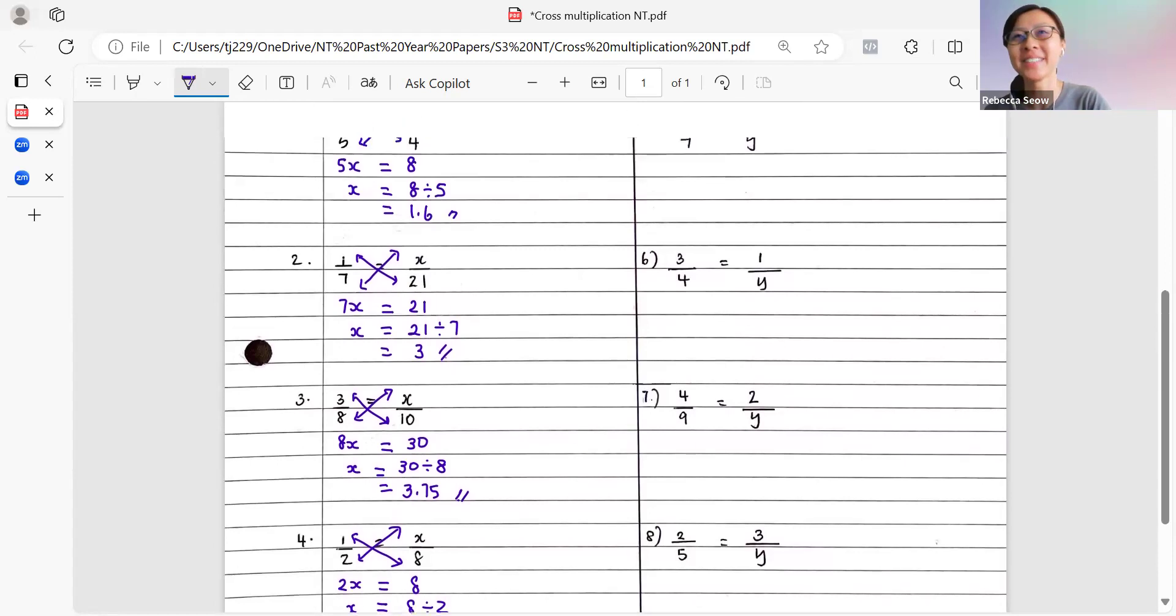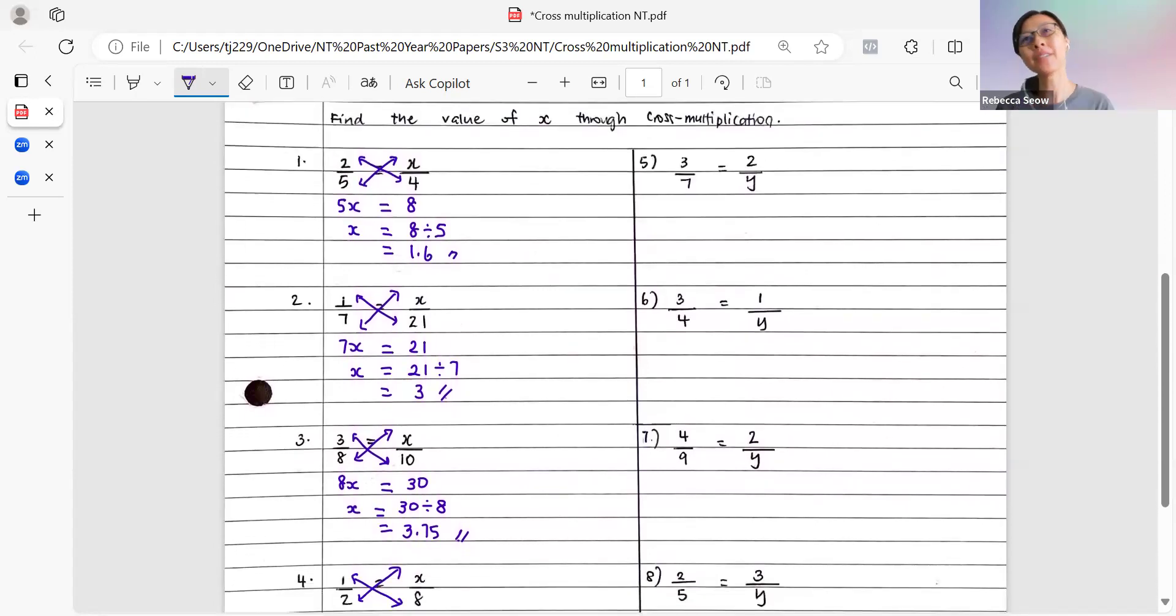Let's take a look at questions 5 to 8. Now, for questions 5 to 8, you realize that the unknown is actually found in the other diagonal. So similarly, we draw in the arrows. Instead of taking 7 times 2, which doesn't contain any variable, let's multiply across the other diagonal, 3 times y. So that gives us 3y equals to 7 times 2, which is 14. And from here, 14 divided by 3, we will get 4 and 2 thirds.